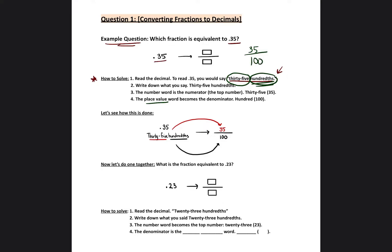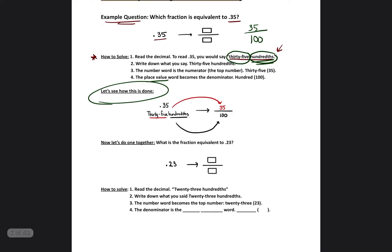So if you look at this next example here, if you look at how it's done, that's exactly what we did. So we started with 35 hundredths. We wrote it out because that's how you say it. The 35, the number word, was written on top and the hundredths was written on the bottom. And so we wrote 35 over 100 as the fraction.